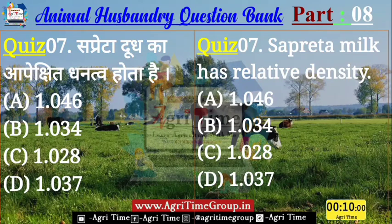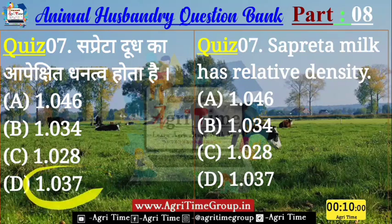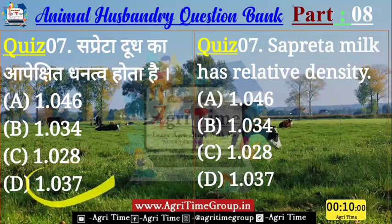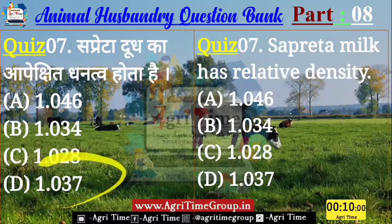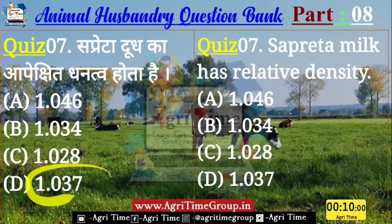Time up होता है। Quiz number 7 का जिन्होंने D answer comment किया है — यानि कि 1.037 — उन सभी का answer right है। सप्रेटा दूध का specific gravity 1.037 होता है। चलिए बढ़ते हैं अगले question की ओर।